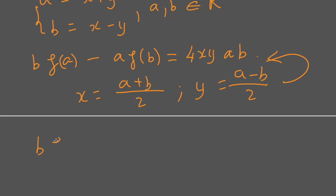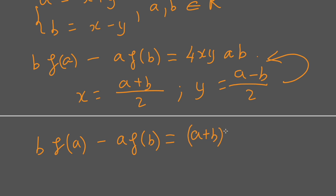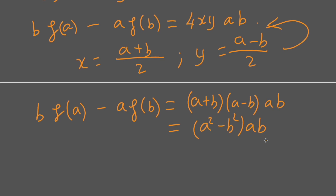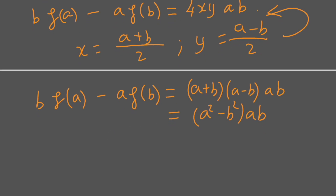After substituting x and y in terms of a and p, we have p·f(a) minus a·f(p) equal to (a plus p)(a minus p) times the appropriate factor, giving us the rewritten functional equation in terms of a and p.